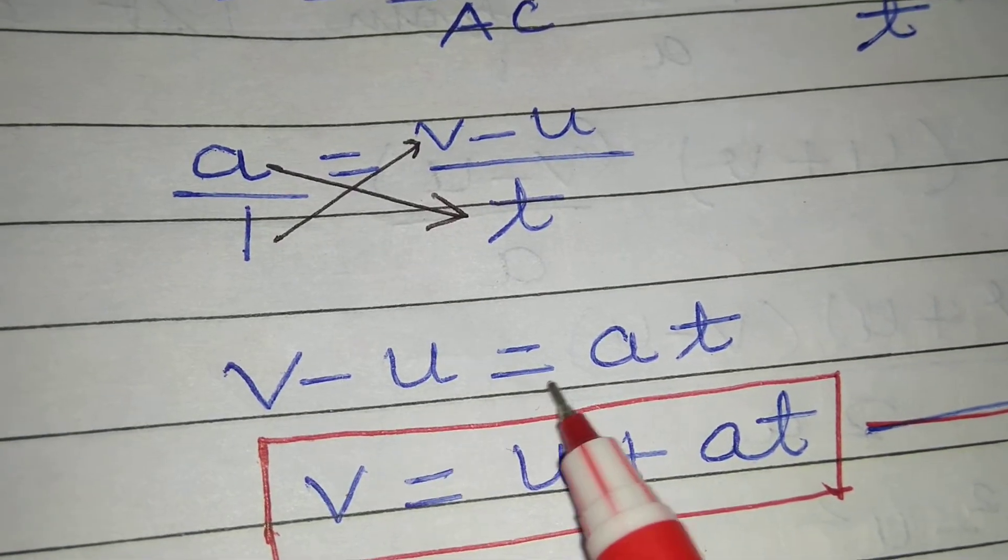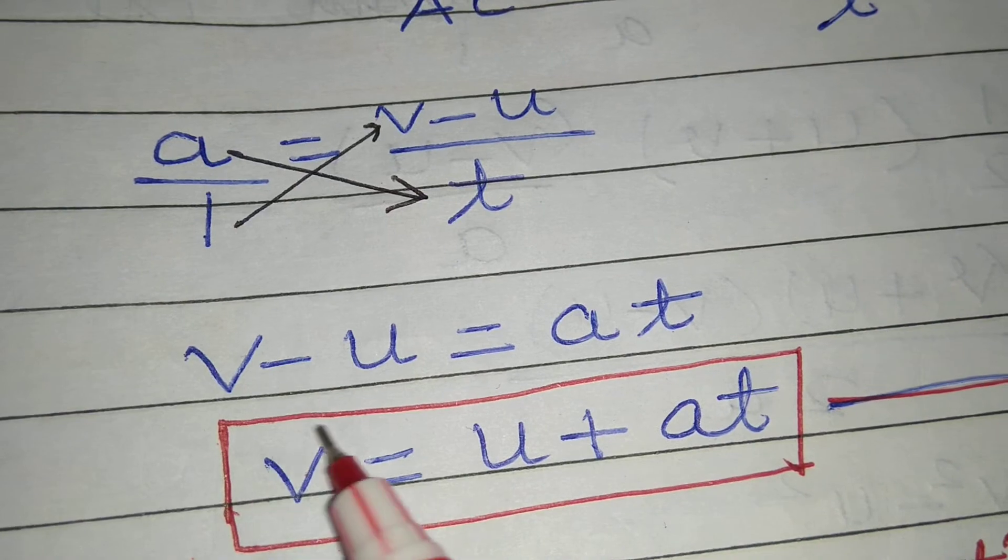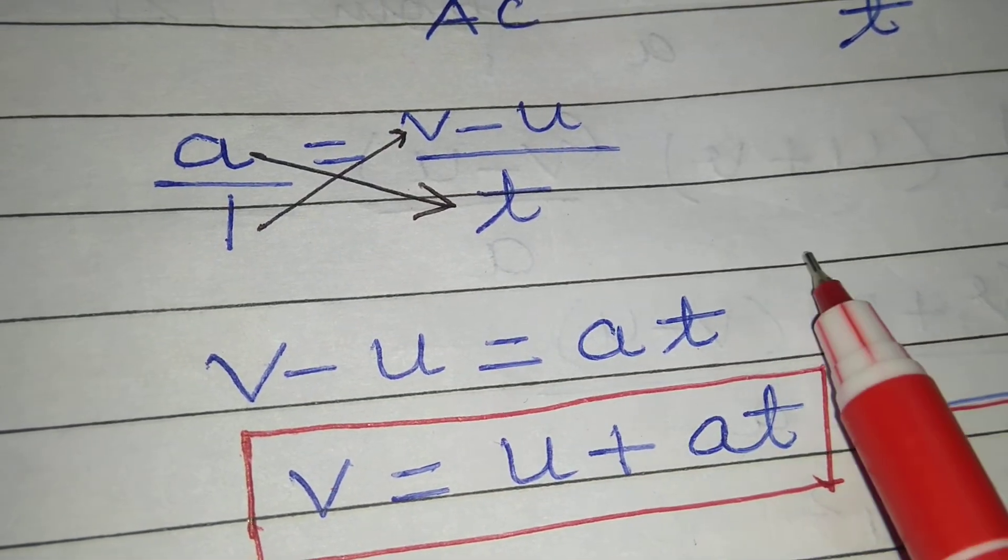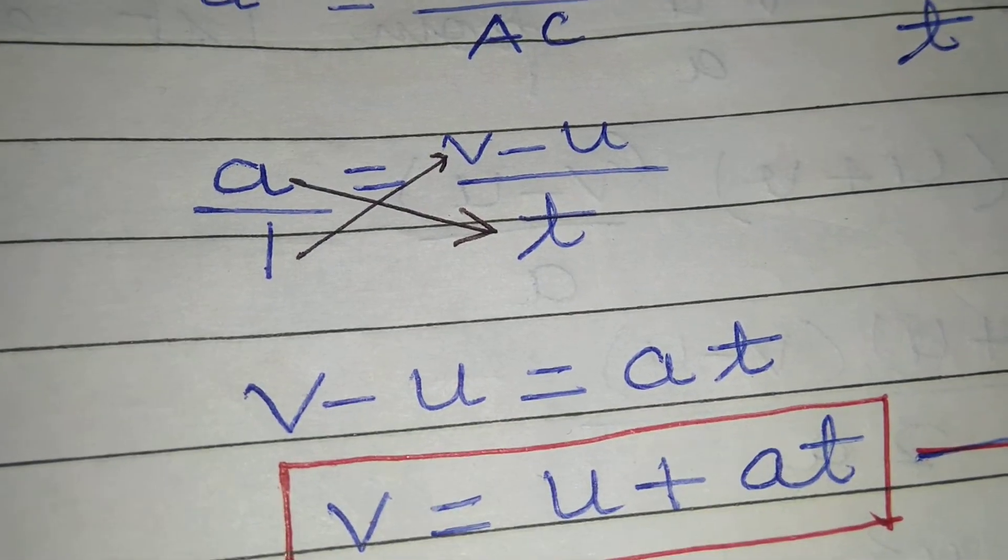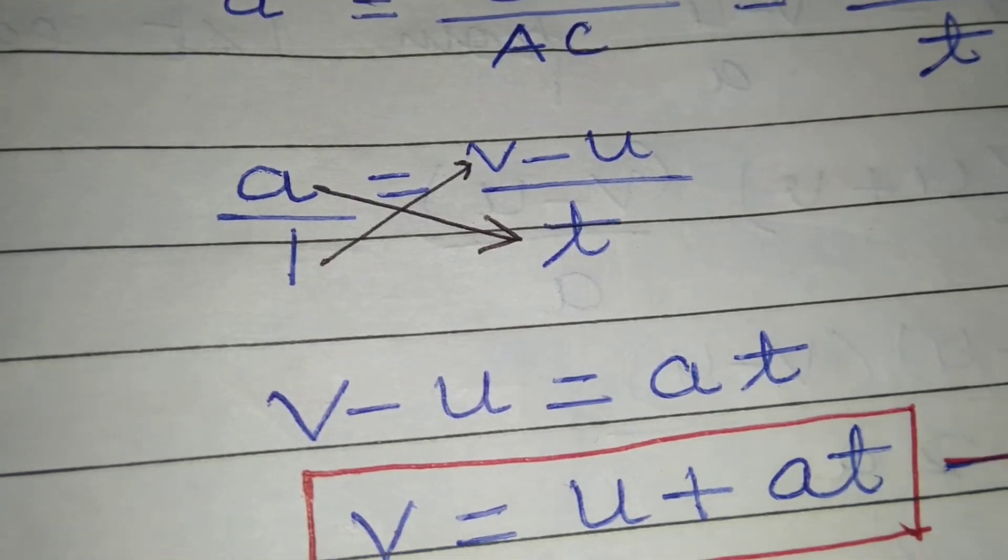Now we will take this minus u to that side of the equation, so it will become v is equal to u plus at. So this is the first equation.